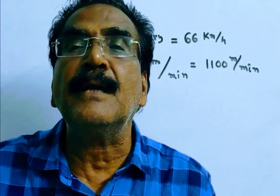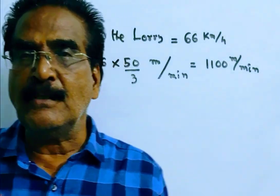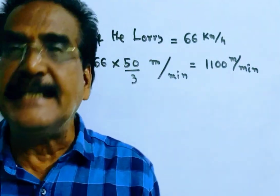Now we want the number of revolutions per minute if the radius of the lorry wheel is 182 centimeters.